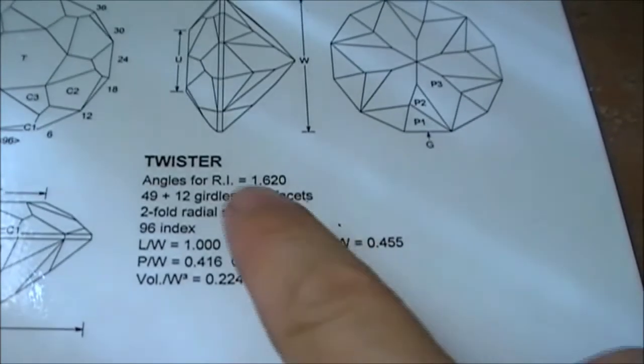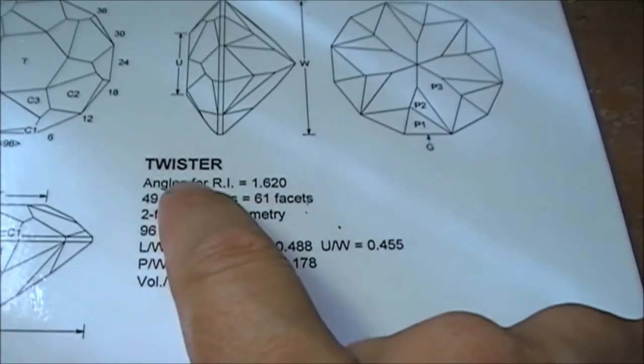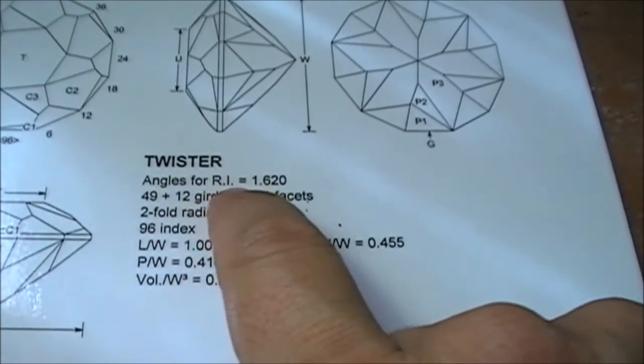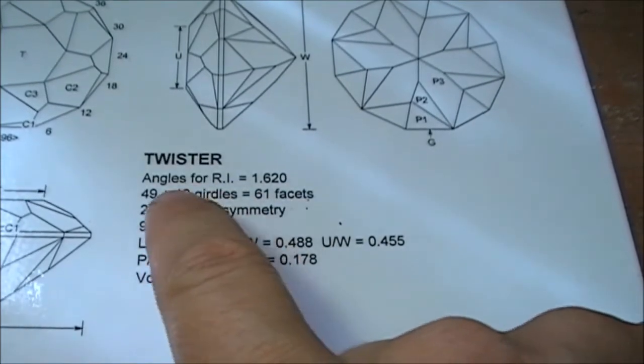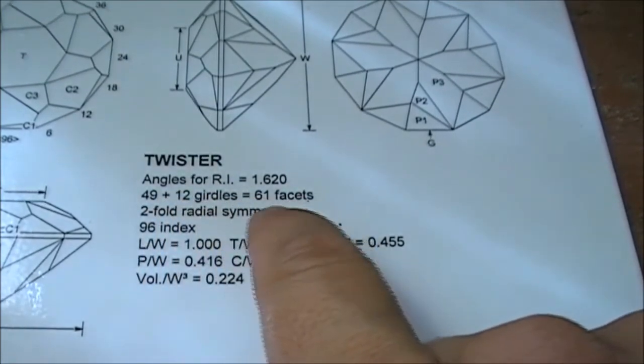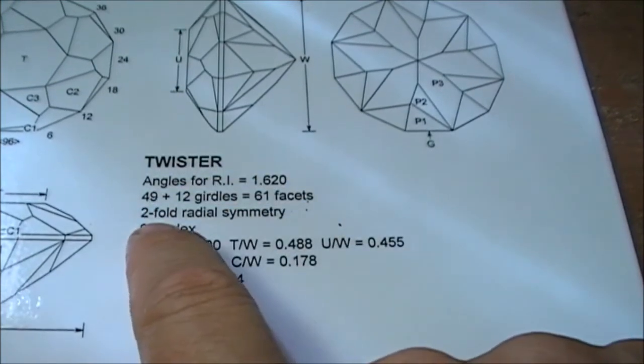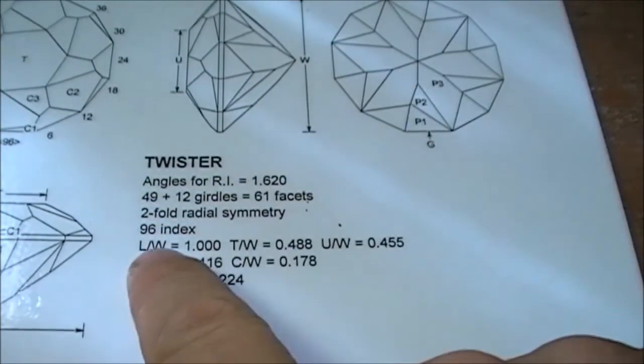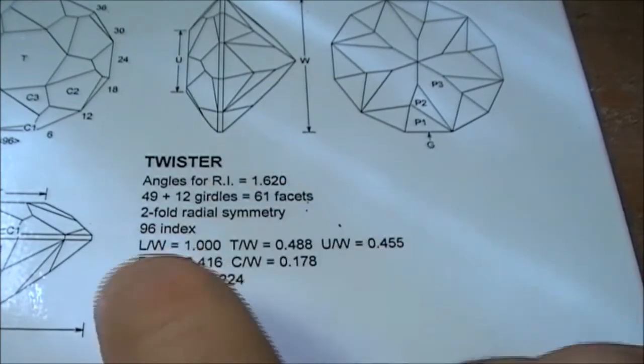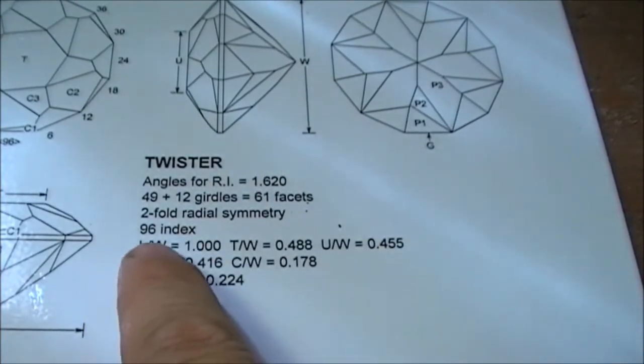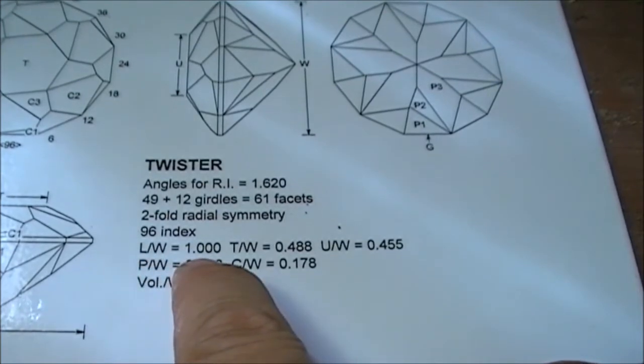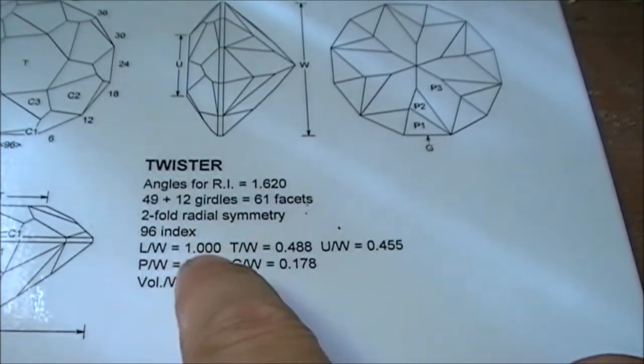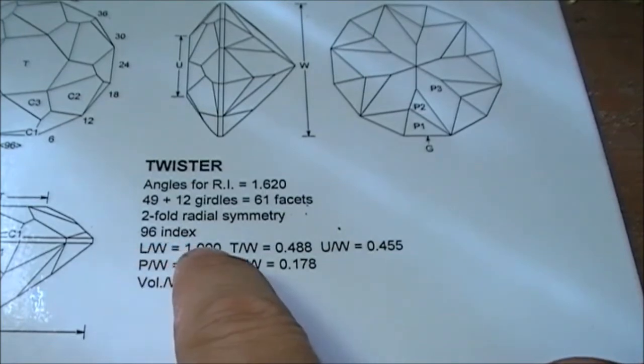This is the name of a cut I did, angles for refractive index 1.62, which is tourmaline. This is the numbers of the facets in the design, equals to 61 facets, 2-fold radial symmetry. 96 index is the standard for the facetron. This is the ratio between length and width is 1, so it means that since it's round, the width is just exactly like the length.